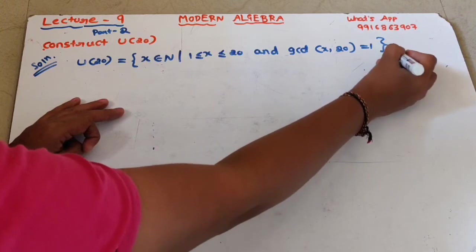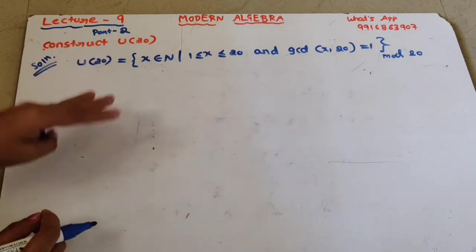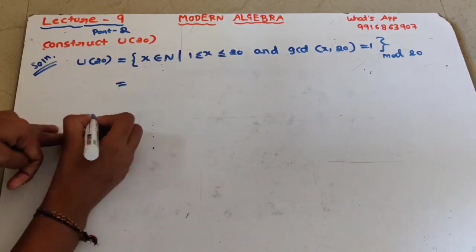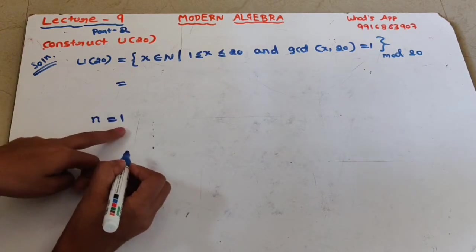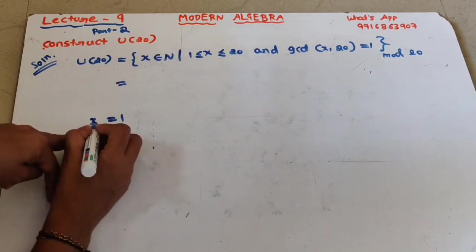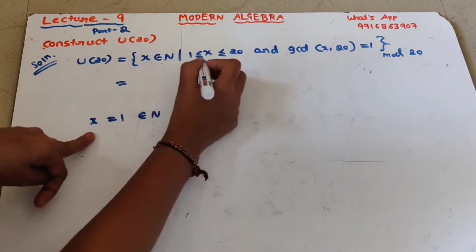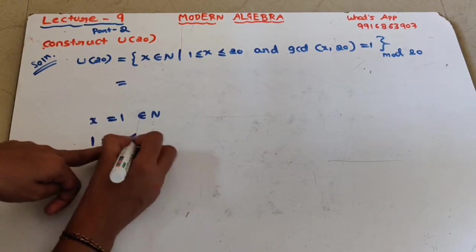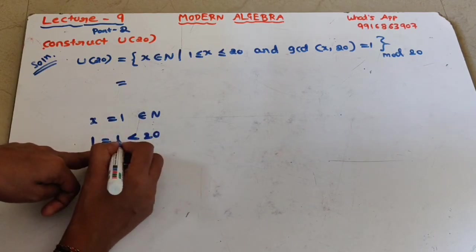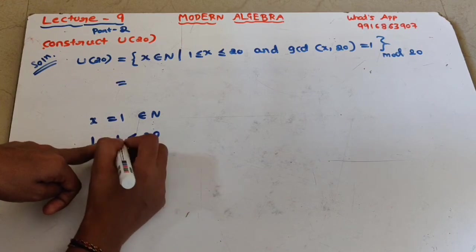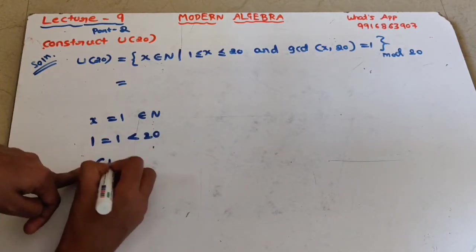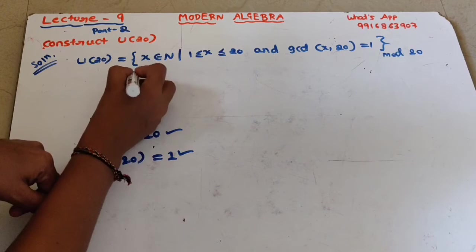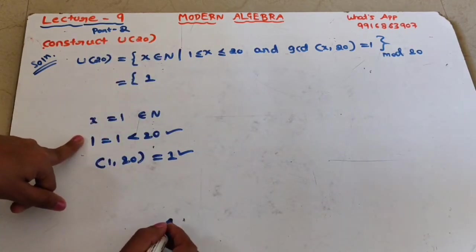This is U(20) under mod 20. Let us check x = 1. Of course 1 belongs to the natural numbers, and 1 is less than 20, so the first condition is satisfied. Also, gcd(1, 20) = 1, so both conditions are satisfied and 1 belongs to U(20).